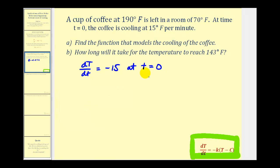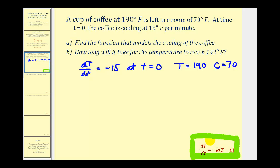The coffee starts at 190 degrees, therefore capital T is equal to 190. And capital C, or big C, is the temperature of the room, which is 70 degrees. So using this information in Newton's law of cooling, our first step is to find K, the constant of proportionality.